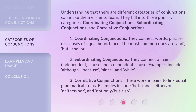One: Coordinating conjunctions — they connect words, phrases, or clauses of equal importance. The most common ones are: and, but, and or. Two: Subordinating conjunctions — they connect a main, independent clause and a dependent clause. Examples include: although, because, since, and while.